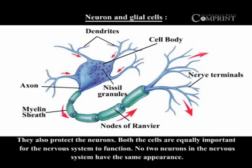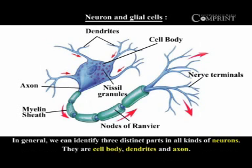No two neurons in the nervous system have the same appearance. In general, we can identify three distinct parts in all kinds of neurons. They are: cell body, dendrites, and axon.